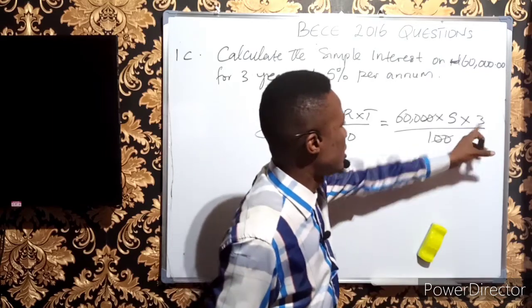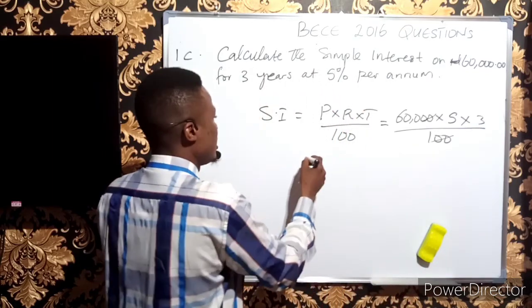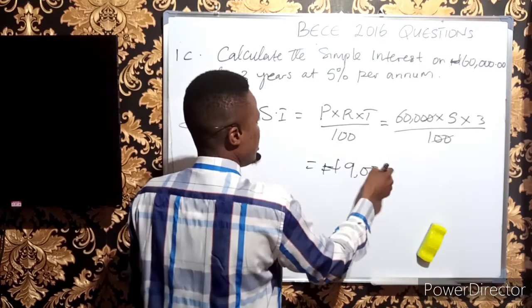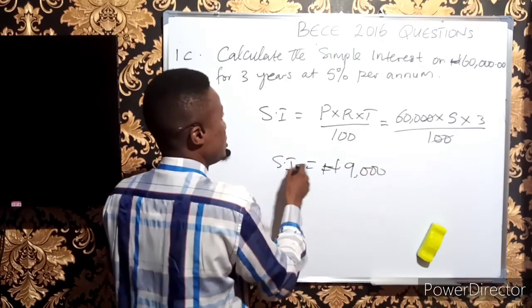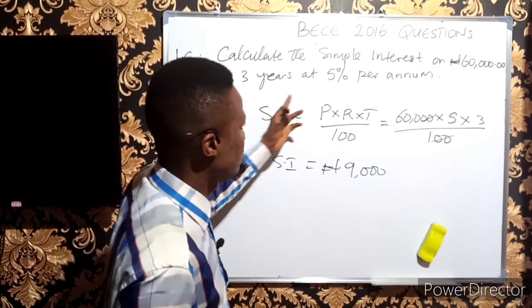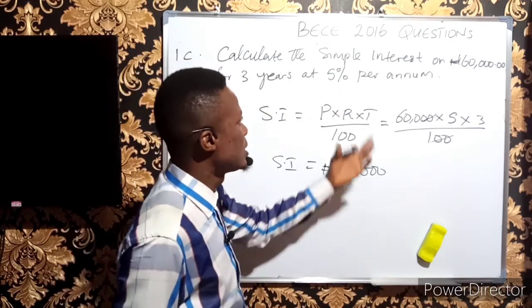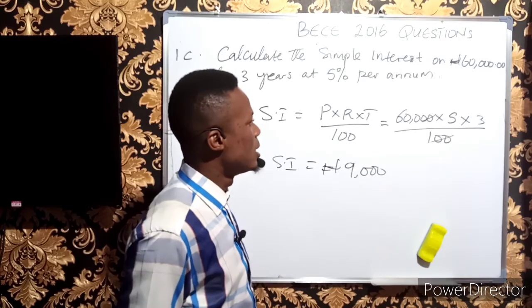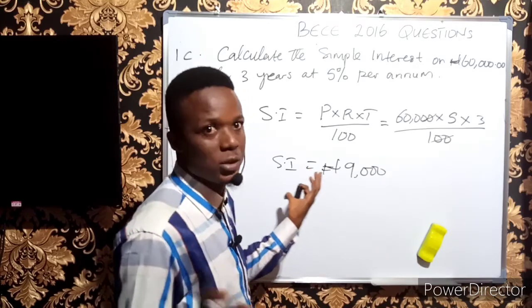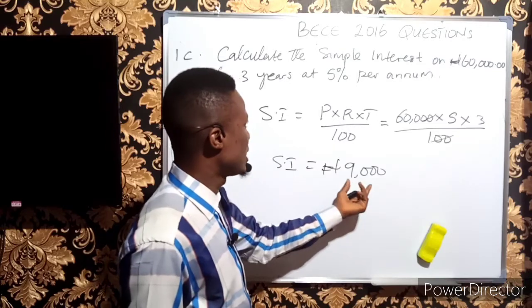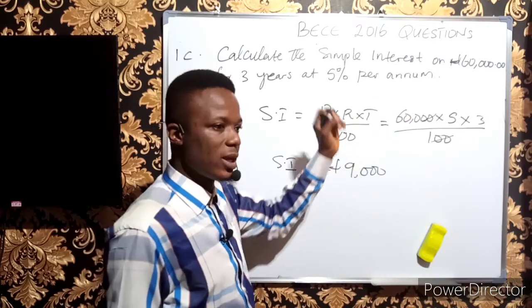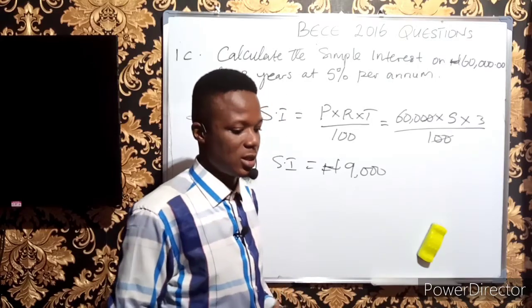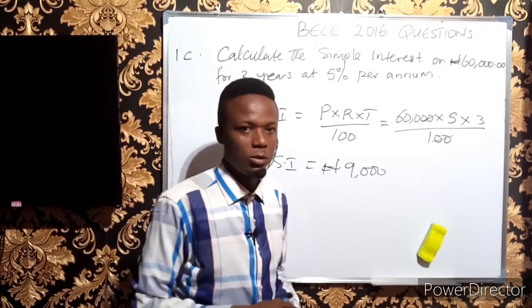Substituting: (60,000 × 5 × 3)/100. Canceling gives us 600 × 5 × 3. 600 × 5 is 3,000, then 3,000 × 3 is 9,000 naira. So after 3 years at 5%, 60,000 naira will yield an interest of 9,000 naira. The amount would be 69,000 naira because amount is the sum of principal and interest.